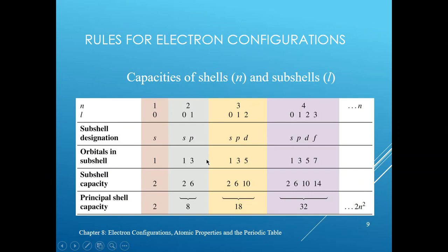Here is a summary of how electrons are distributed among different orbitals within different subshells and shells. In the first shell, there is only one s orbital with a maximum capacity of two electrons. When n=2, there is one s orbital and three p orbitals; the s sublevel holds a maximum of 2 and the p sublevel holds a maximum of 6, so the total maximum for the second shell is 8. You can rationalize what happens in higher shells from this.